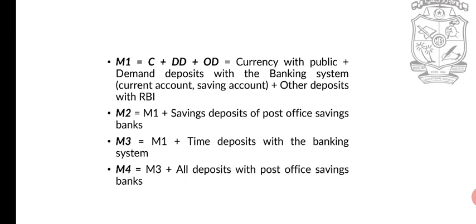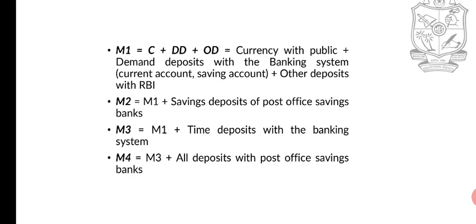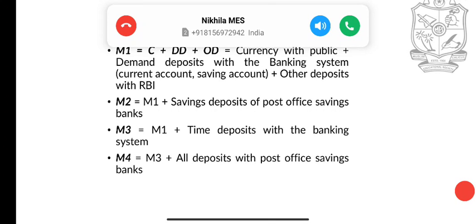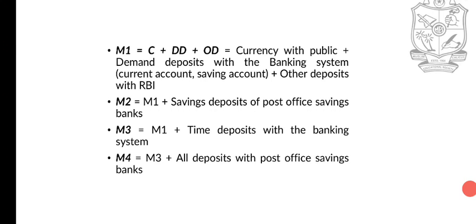The third measure is M3. M3 is equal to M1 plus time deposits with the banking system. The fourth measure is M4, which is equal to M3 plus all deposits with post office savings banks.